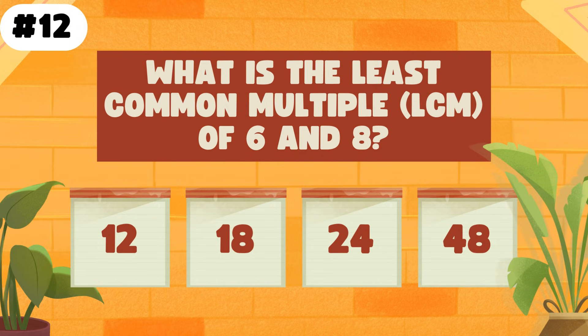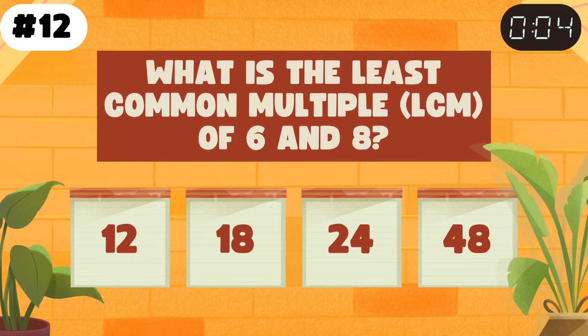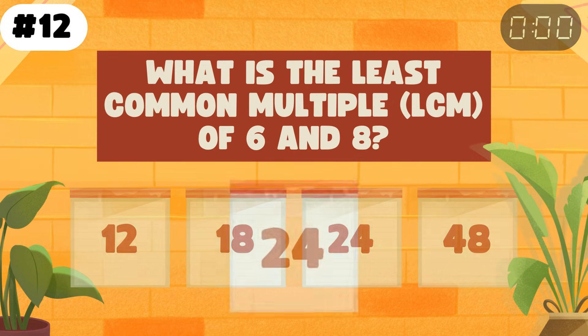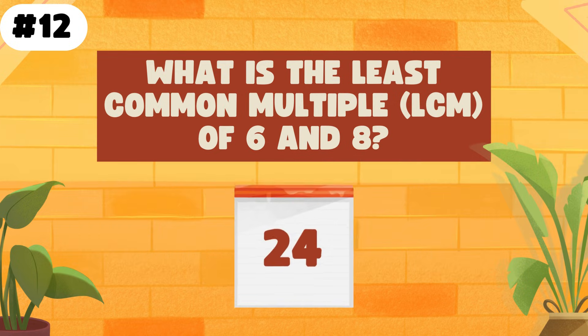What is the least common multiple of 6 and 8? The answer is 24.